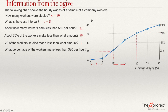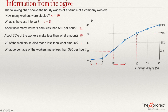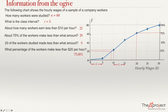The final question: what percentage of the workers made less than $20 per hour? I find $20 on the x-axis, go up to find the point on the ogive, then read the cumulative relative frequency on the right axis. The answer is 75%. If the question instead asked how many workers made less than $20, I would go up to the point and then move left to read the cumulative frequency.